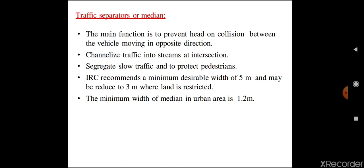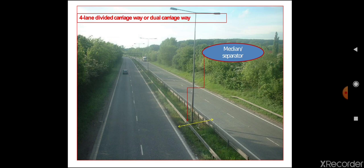IRC recommends a minimum desirable median width of 5 meters, which may be reduced to 3 meters where land is restricted. The minimum width of median in urban areas is 1.2 meters. So for national highways or state highways the traffic separator width may vary between 3 to 5 meters, whereas in urban areas the median width may be 1.2 meters.